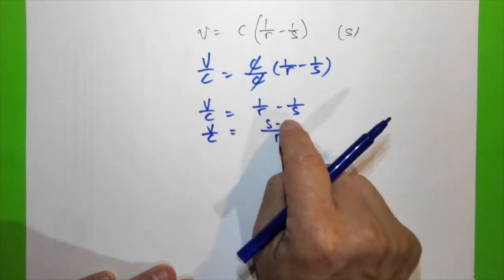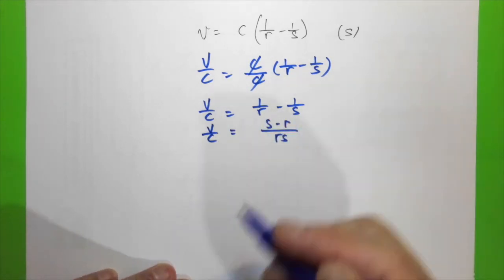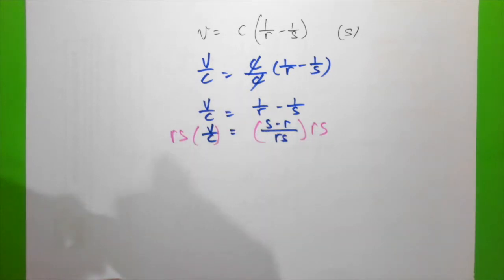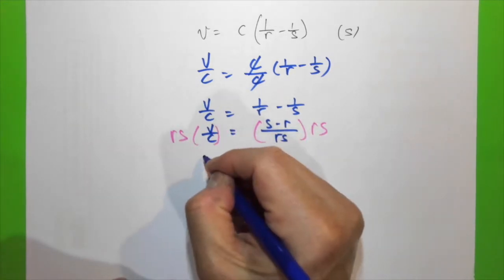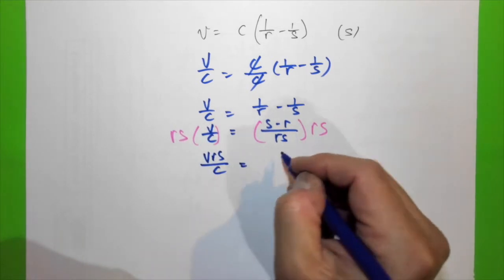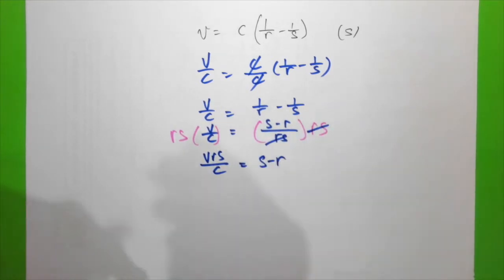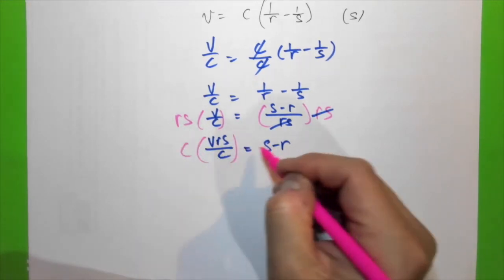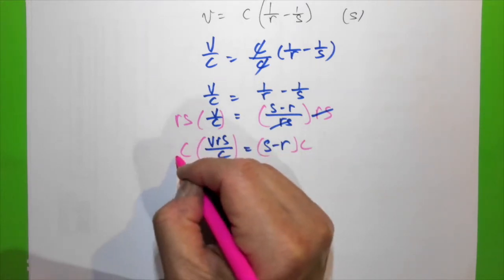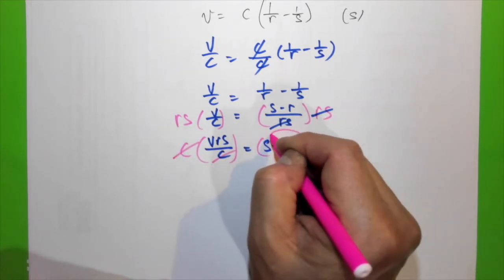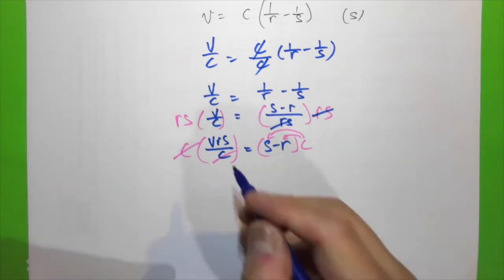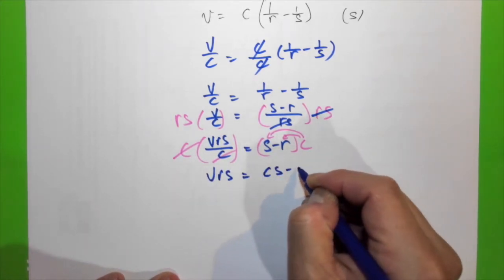Multiplying both sides by rs gives vrs/c = s − r. Then multiplying both sides by c eliminates c. Using the distributive law: vrs = cs − rc.